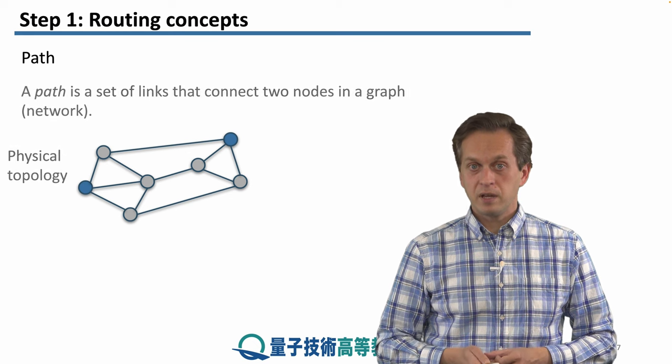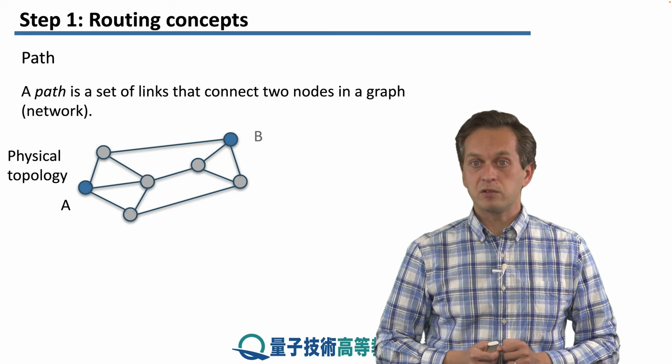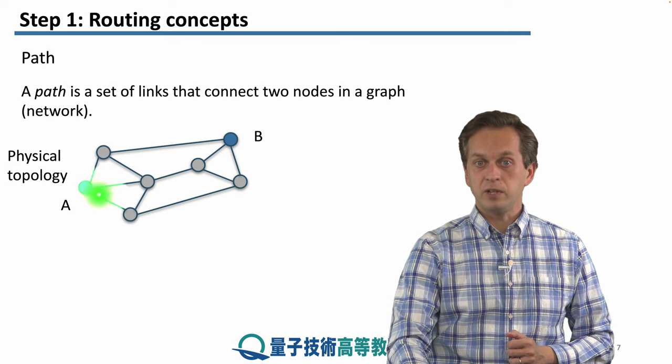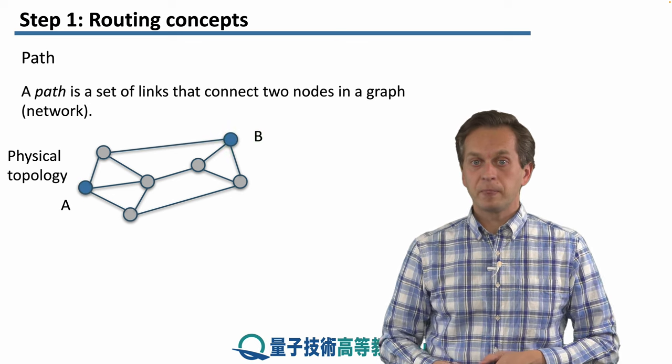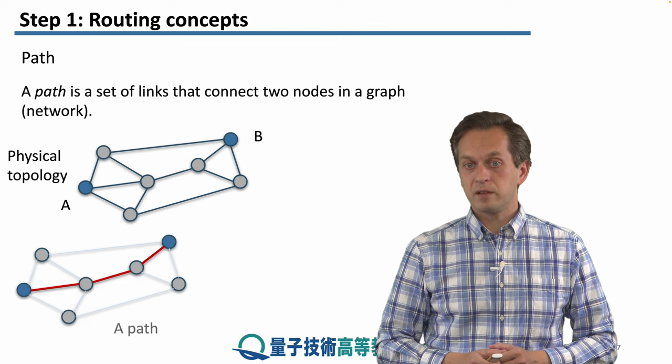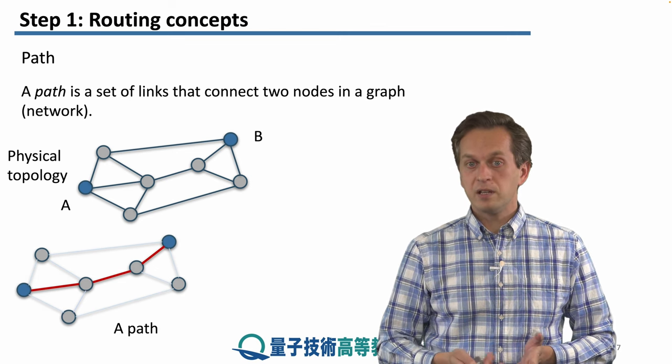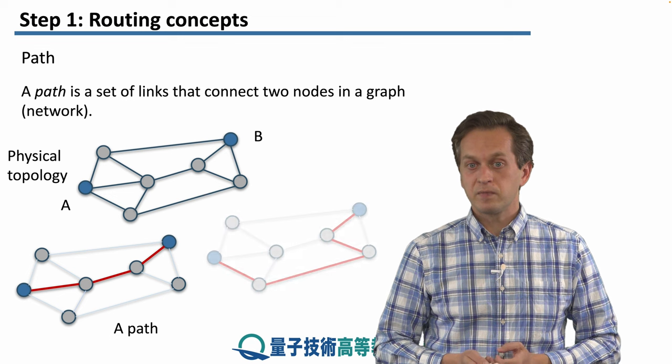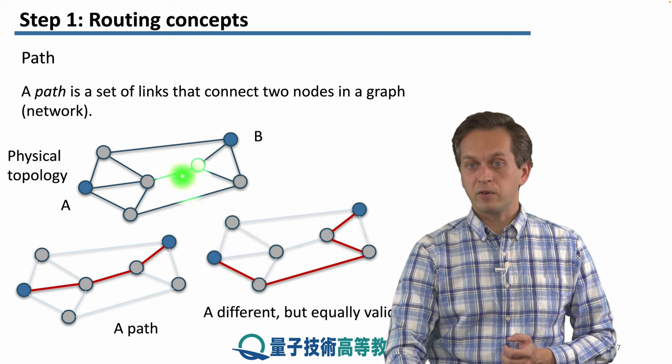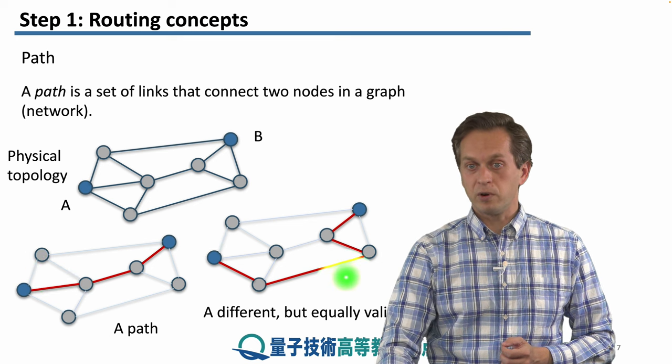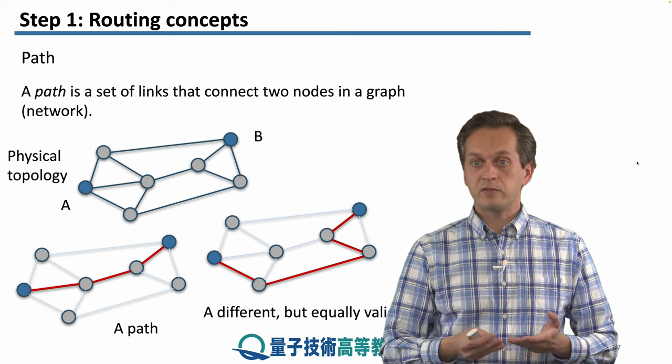A path is a set of links that connects two nodes in a graph or a network. We have our node A and node B here, and this is a valid path connecting A and B. As you can see, this path is not unique. We can have other paths. For example, the original one had three links in it, this one has four. But still, it gets us from A to B.